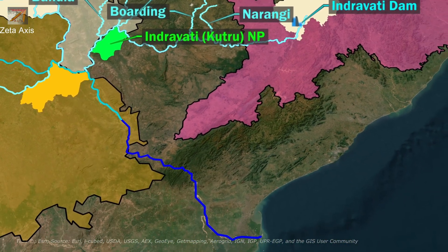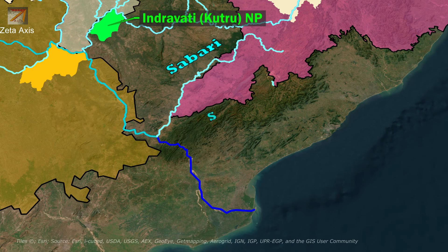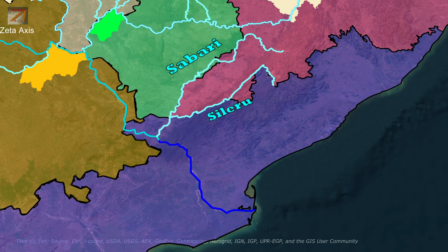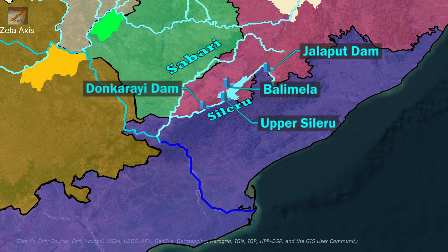The Godavari River flows further and reaches Andhra Pradesh where it is joined by Sabari River. The Sabari River originates in the Eastern Ghats in Odisha and flows into Andhra Pradesh where it meets Godavari. Sileru River, also known as Machkund, is the major tributary of Sabari, joining Sabari at the trijunction boundary point of Andhra Pradesh, Chhattisgarh and Odisha. Several dams have been built on Sileru River including Jalaput Dam, Balimela Reservoir, Upper Sileru Dam and Donkarai Dam.